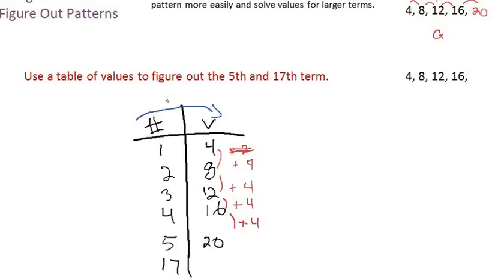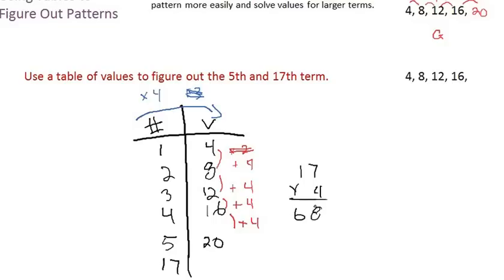How do I get from 1 to 4? Well, I could multiply by 4, or add 3. I don't know which one yet. 2 times 4 gives me 8 — yes. 2 plus 3 gives me 5 — no. Let's double check: 3 times 4 is 12, 4 times 4 is 16, 5 times 4 is 20. This checks out, so the rule is multiply by 4 across. So for the 17th term: 17 times 4 equals 68. Instead of going all the way down 17 times, we just figured out you multiply the term number by 4 to get the term value.